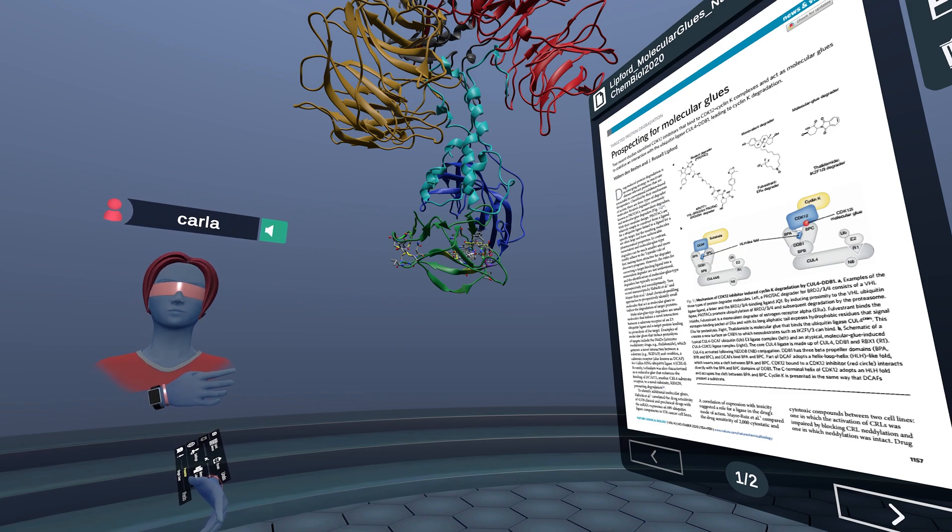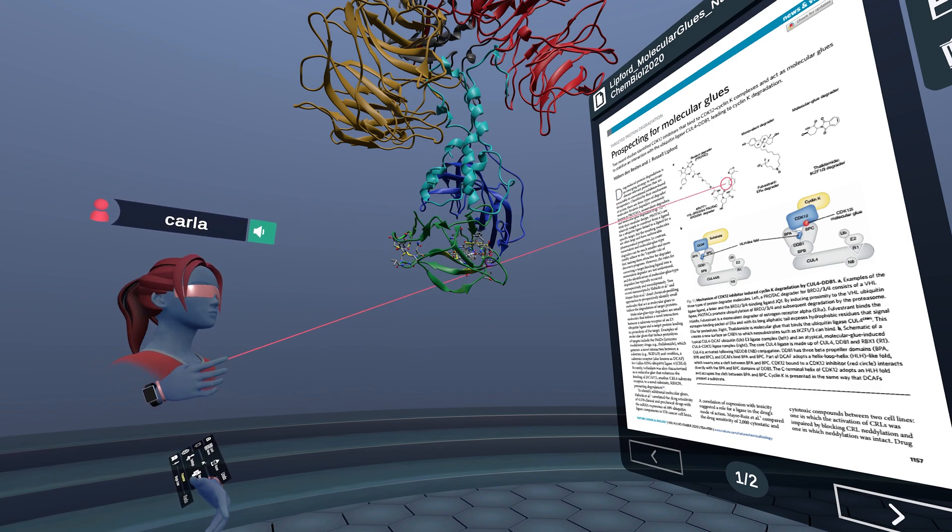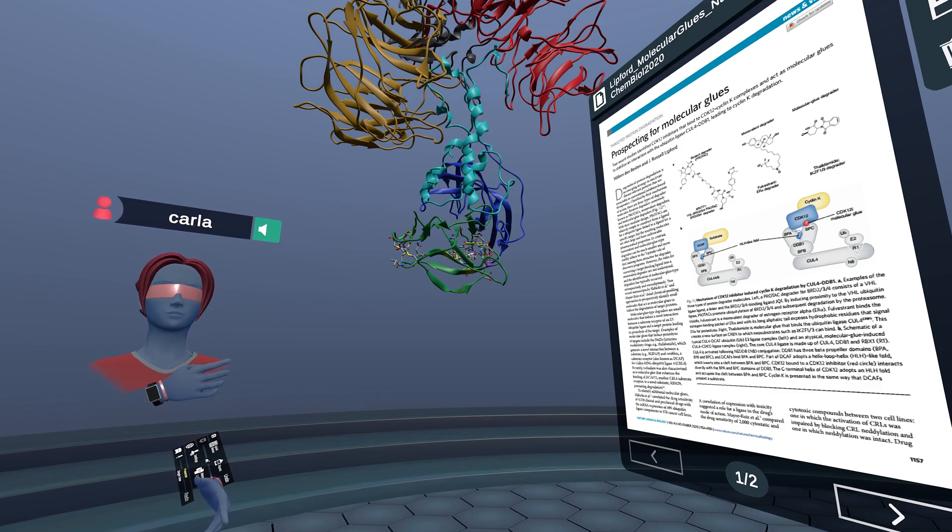Protacs consist of a degradation-target-specific ligand linked to a ligand for a ubiquitin ligase, such as the compound Arvenus-771, which consists of an R-hydroxyproline moiety specific for VHL E3 ligase, connected to a triazolodiazepine acetamide specific for bromodomain and extraterminal domain, or BET, implicated in lymphoma.